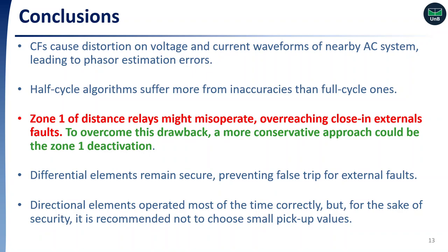As conclusions, we can point out that commutation failures cause distortion on voltage and current waveforms of nearby AC systems, leading to phasor estimation errors. These errors are even more aggravated for half-cycle algorithms, revealing that the use of short data windows may be an issue for protection schemes in these scenarios. These errors may lead Zone 1 of distance relays to misoperate, overreaching close-in external faults. In order to overcome this drawback, the Zone 1 reach can be reduced, or, as a more conservative approach, Zone 1 can be deactivated.